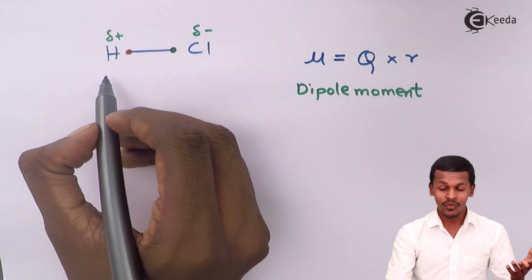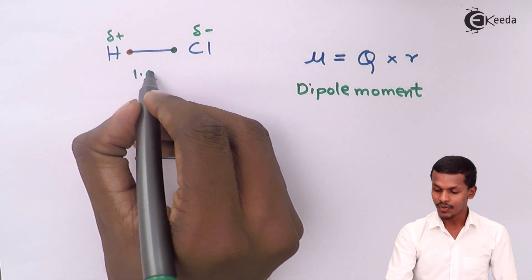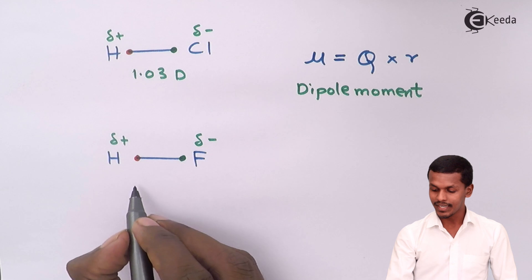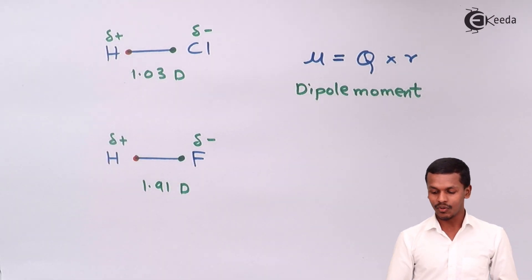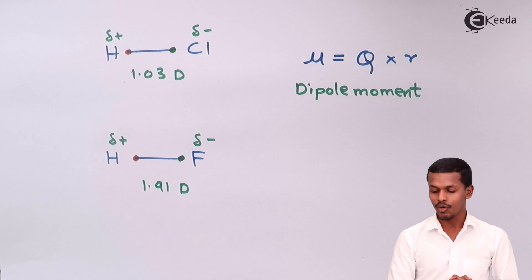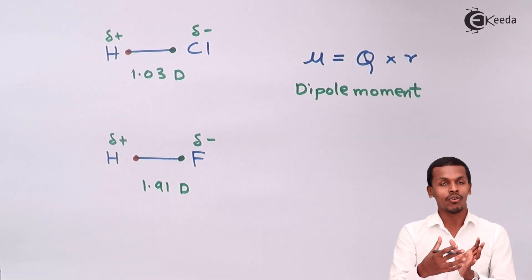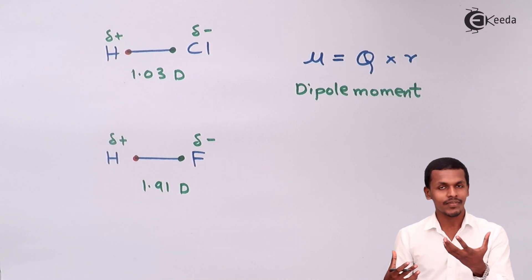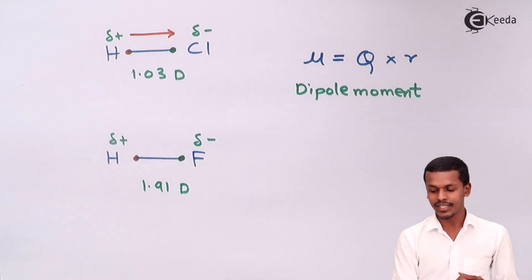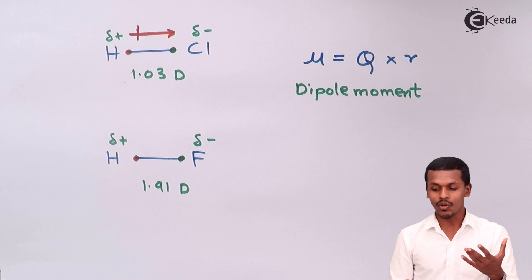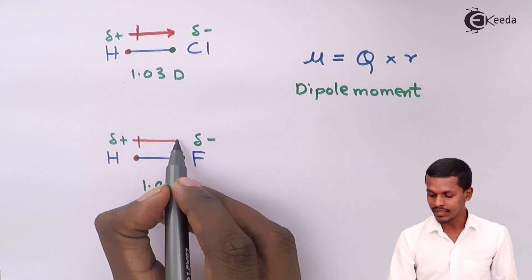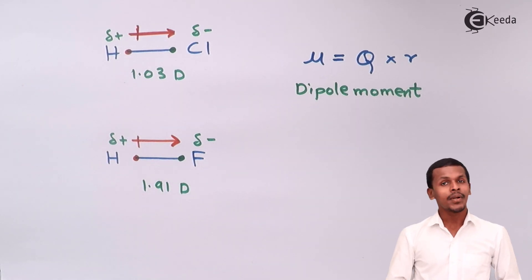It has been found that the dipole moment (μ) of HCl is 1.03 D, and for HF it is 1.91 D. When we want to show the polarity of a covalent bond, we use an arrow to represent the direction of electron attraction — because the tendency to attract electrons is greater toward the more electronegative atom. So the arrow indicates that electrons are moving toward the more electronegative atom, both in HCl and in HF.